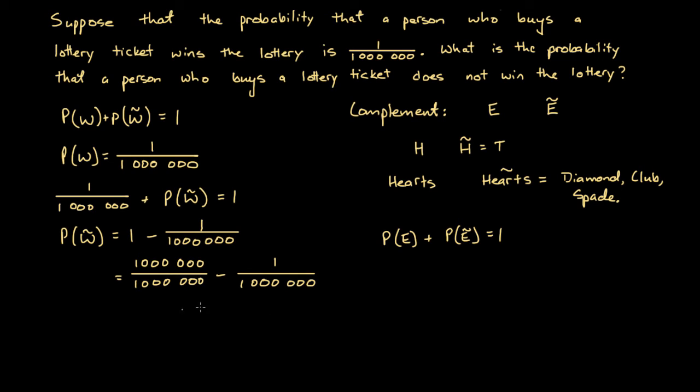So here, a million minus one is 999,999 over a million. So the probability of not winning the lottery is 999,999 over a million.